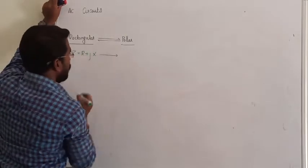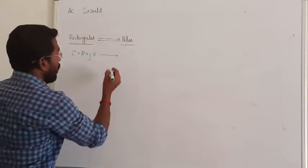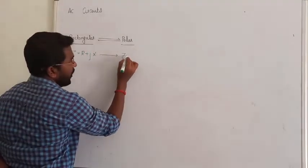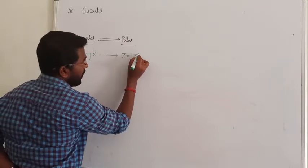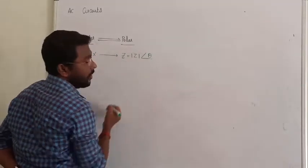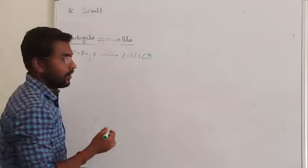Here we are representing polar, the same impedance in polar coordinate. We have to write it like this: mod of Z at an angle of theta. Here, theta is the impedance angle. So we have to calculate two things.